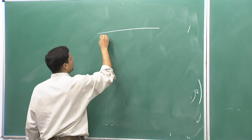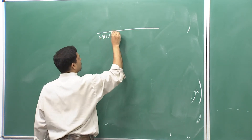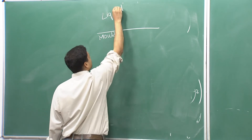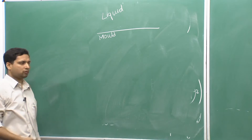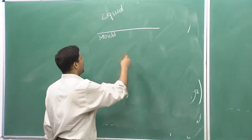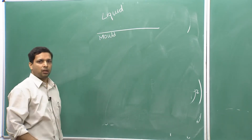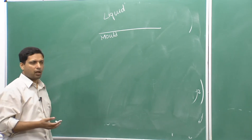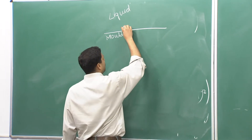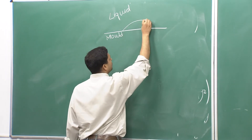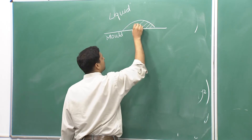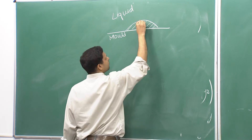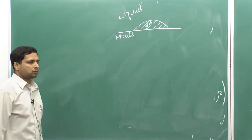Let us say this is the mold and this is the liquid. The mold is whatever is containing the liquid material that has to be solidified. There is an interface between liquid and mold, and whenever there is an interface, there will be energy associated with it. Now let us say you form a solid here — this is our newly formed solid.